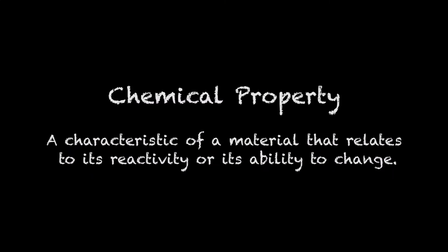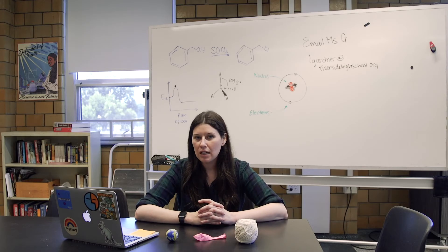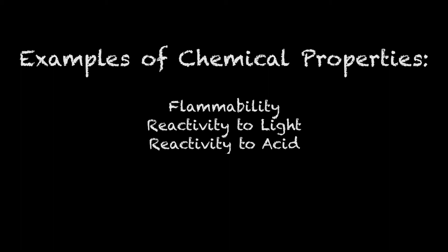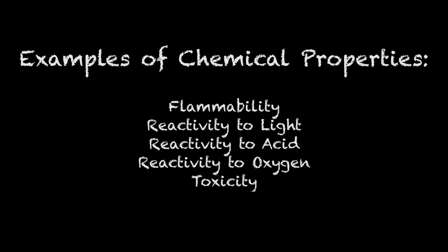A chemical property is a characteristic of a material that relates to its reactivity or its ability to change. Some examples are the flammability of a substance, its reactivity to light or acid, its reactivity to oxygen — such as whether it rusts easily — the toxicity of a material, and its reactivity with water.